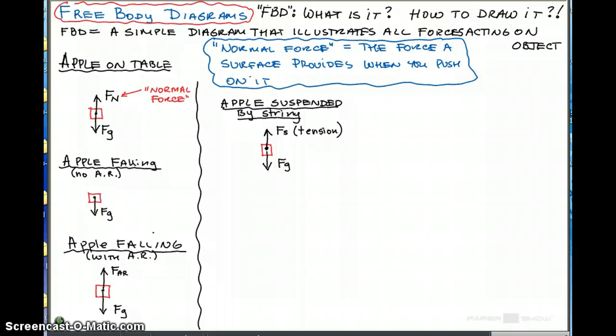Let's box this. These are all kind of separate diagrams. So the next example: a box sitting on a table would be just like an apple sitting on a table. Really no difference.